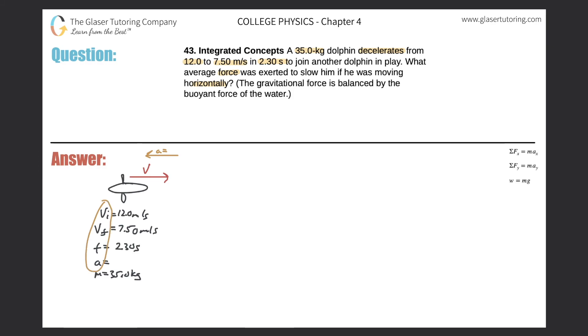Taking these four variables into account, what's the relationship between those four? Think back to your kinematics chapter. We should have something that looks like this: the final velocity equals the initial velocity plus the acceleration times time. The final velocity is 7.50, the initial is 12.0, the acceleration is what we're looking for, and the time is 2.30 seconds.